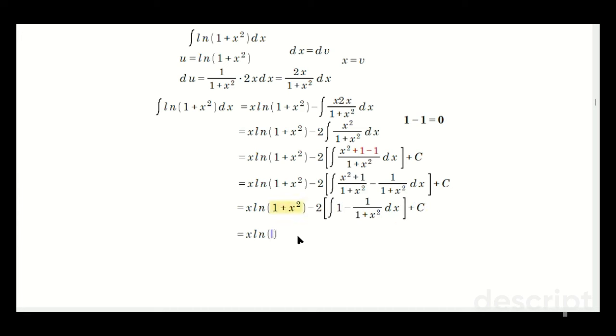So it's x ln(1+x²) minus 2, so the antiderivative of 1 is x, right? Of the other thing here, it's tan inverse, that's why you wanted to write it this way, see, and then plus c.